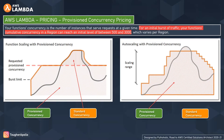If your function still needs further capacity, AWS provides auto scaling with provisioned concurrency. Using Application Auto Scaling, you can create a target tracking scaling policy that adjusts provisioned concurrency levels automatically based on utilization metrics. In the example, there is a minimum and maximum range of provisioned concurrency. As requests increase, auto scaling increases provisioned concurrency in larger steps up to the configured maximum. As requests decrease, it lowers concurrency in smaller steps, creating a balance for you and your users.